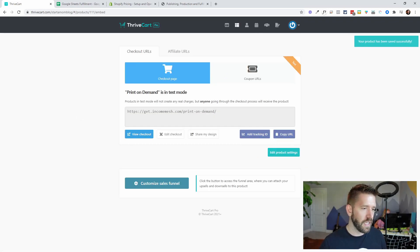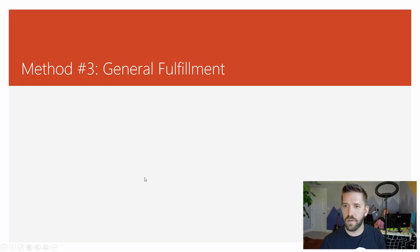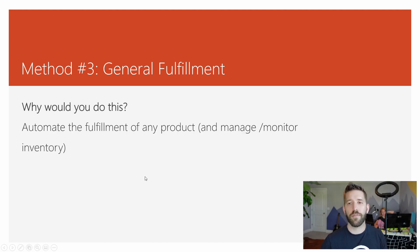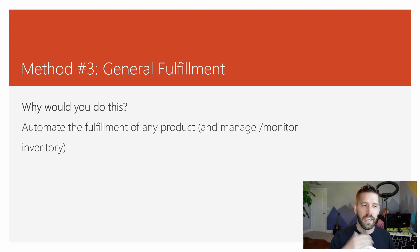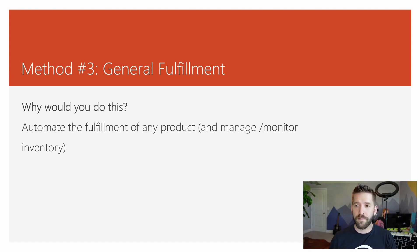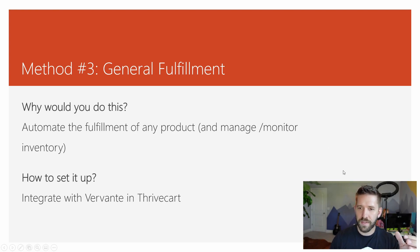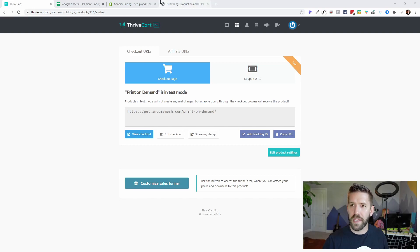That's option number two — sending it with Vervante. Now for method number three: general fulfillment. Basically, if you want to automate the fulfillment of any product and manage your inventory, Thrivecart doesn't have its own built-in inventory management system — and that's honestly because it's not the focus of the software. Its job is to convert people from buying your initial product to taking bumps, upsells, and downsells. So you will rely on another platform. Since we're already on Vervante, they do have the ability for general fulfillment services as well.